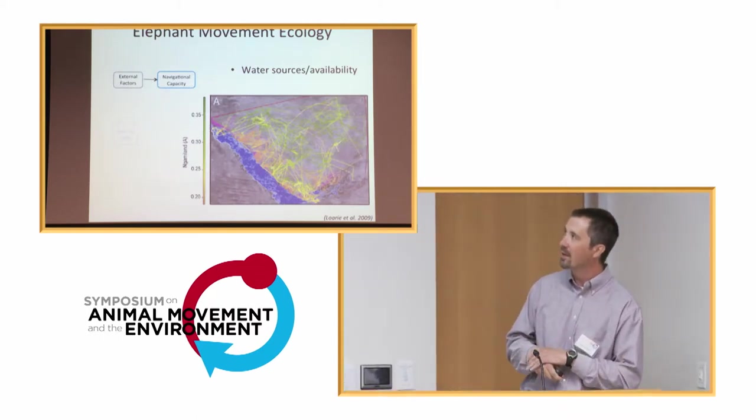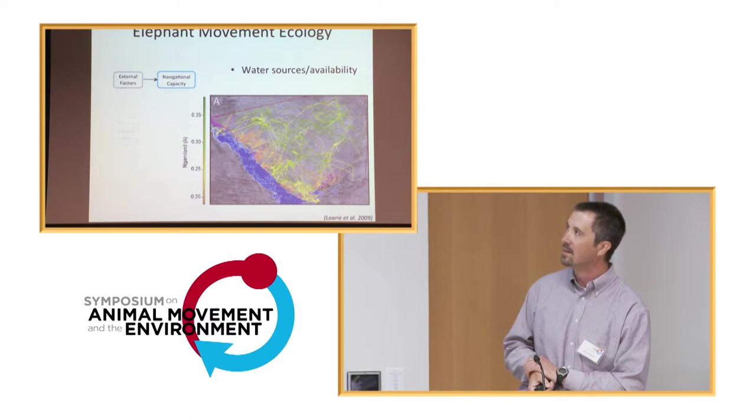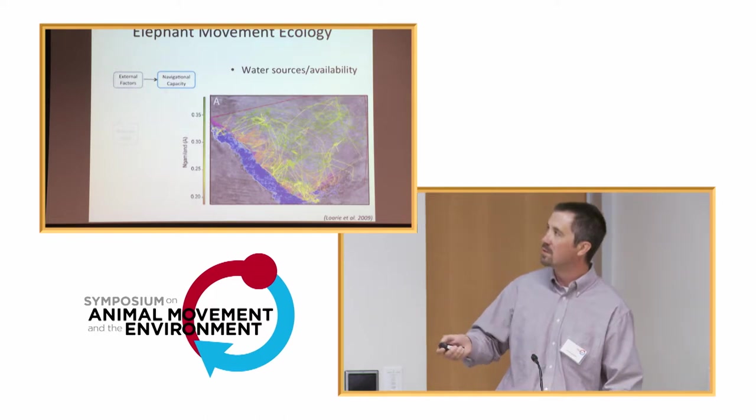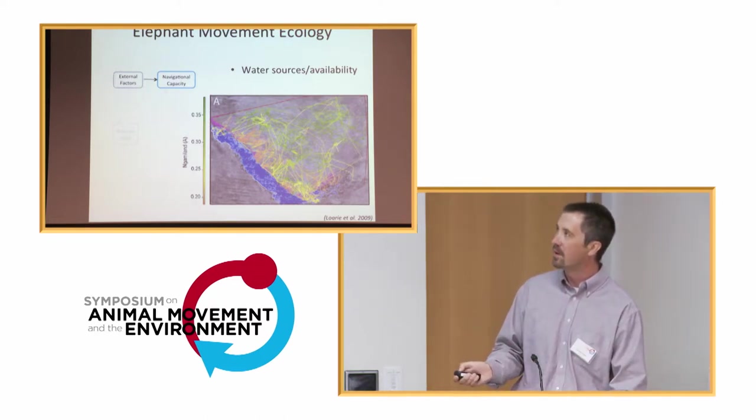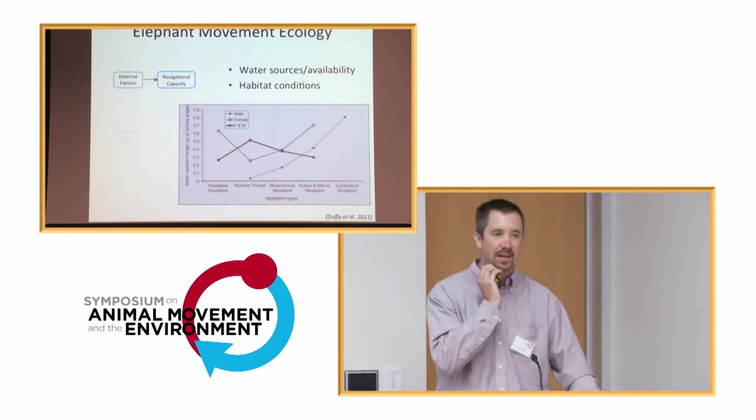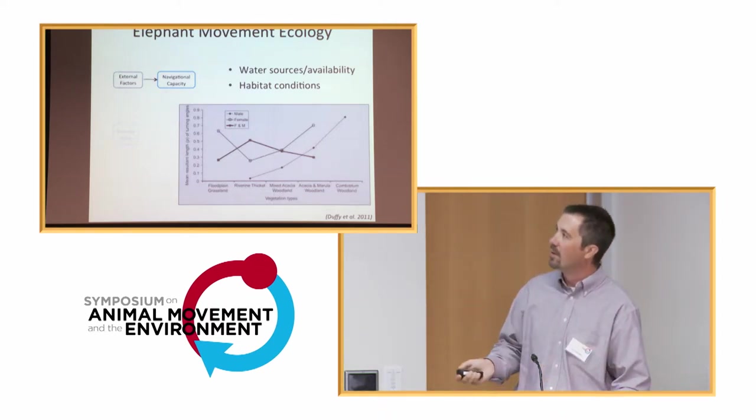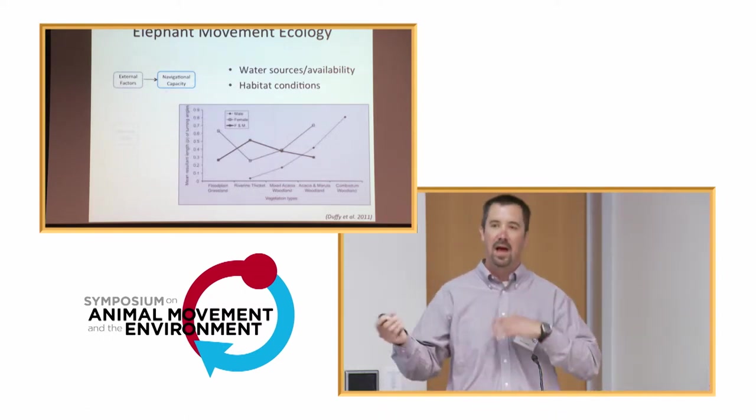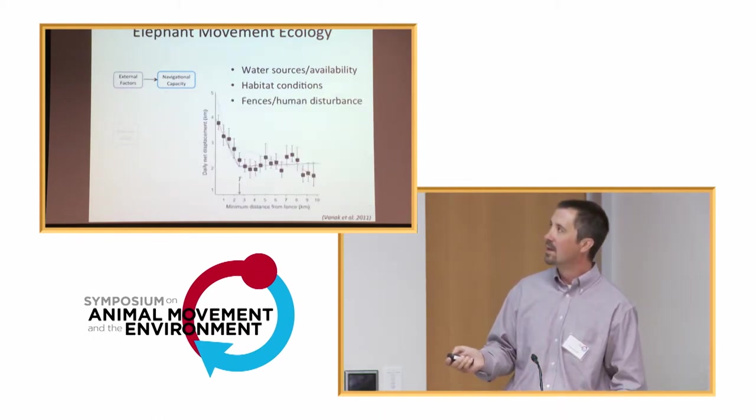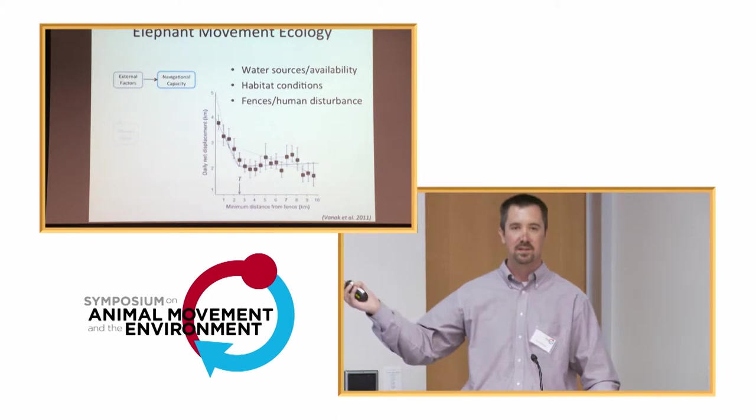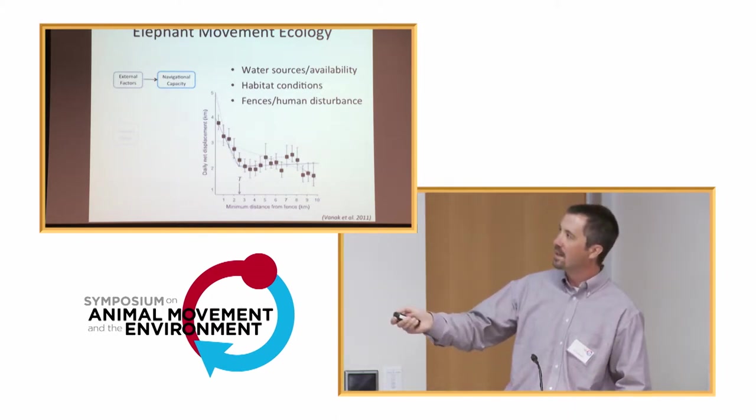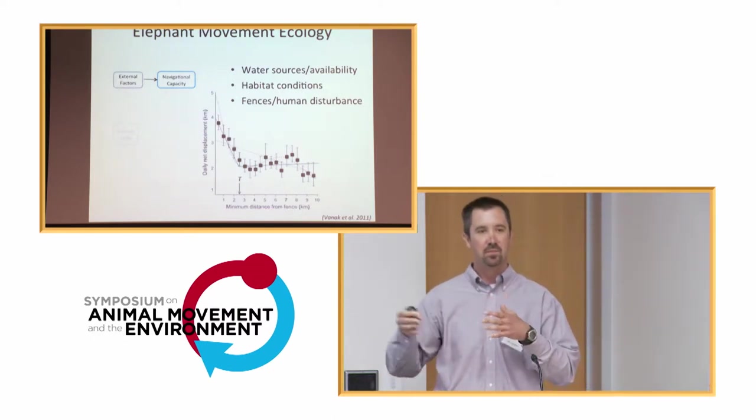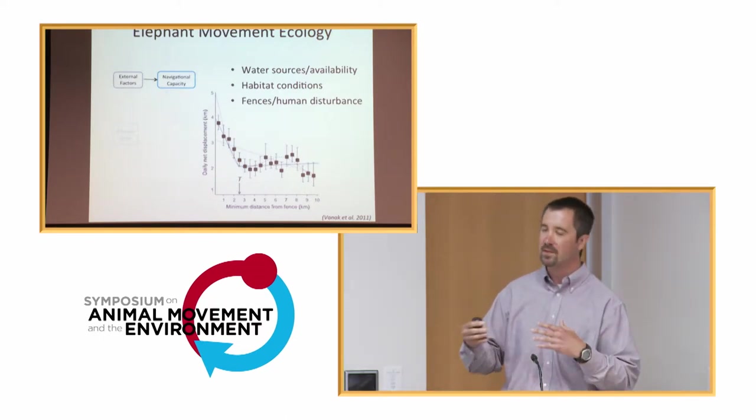For elephants, just to give you a quick background on some of what we know about this species already. We know that water sources are very important to them, where they might exhibit restricted movements and looping movements close to water sources in arid environments. We also know a fair amount about how habitat conditions vary with these different habitat types. And we also know that human disturbances, such as fences, can dramatically influence movement. Net daily displacement is very high when they're really close to fences, and then as they get further away from fences, their movement rates decrease.